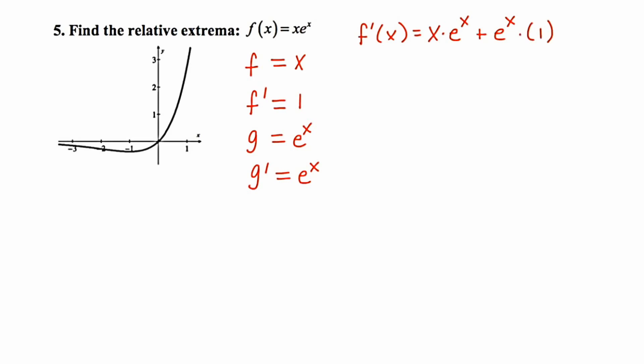Now I can clean this up, and I can also factor out an e to the x, which is present in both terms. Now that we've found the first derivative, and we've cleaned it up, I want to find the critical numbers by setting the derivative equal to 0. So I'm going to go ahead and do that now.